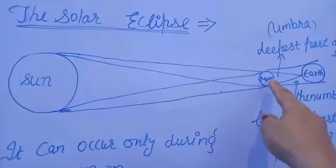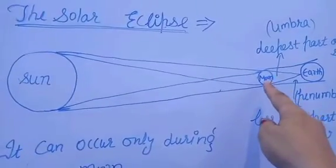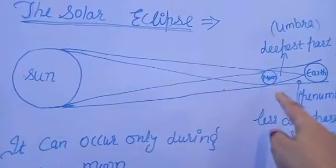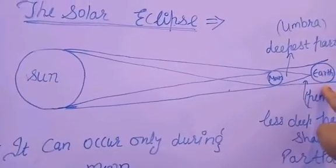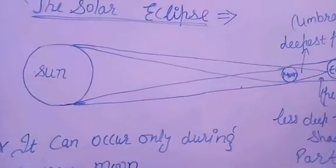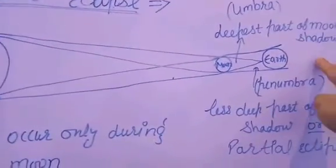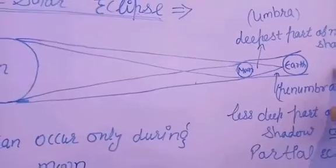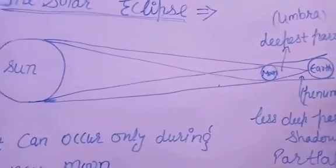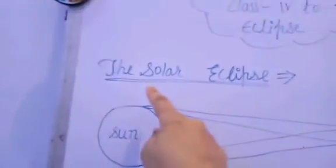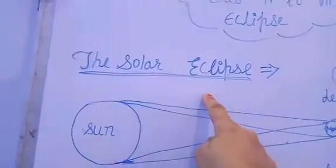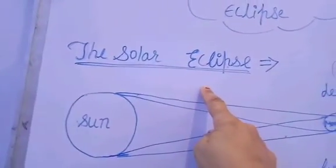Now you know that the moon position is changing because it's revolved around the earth. So in that condition, there are two eclipses. The first is the solar eclipse and the second is the lunar eclipse.